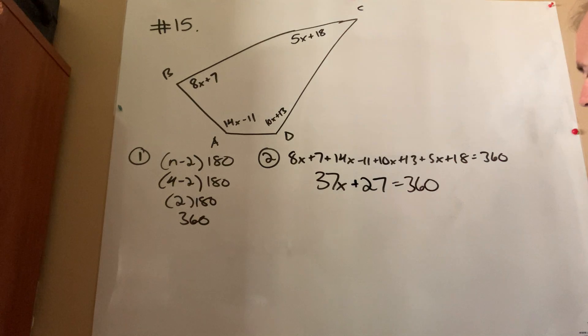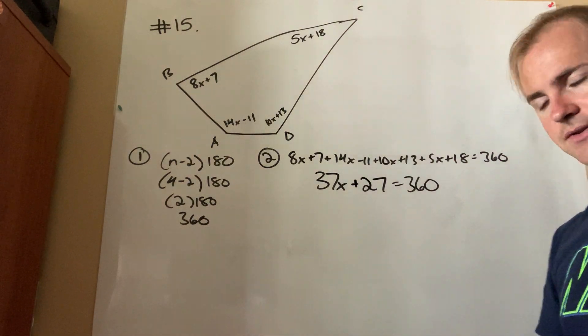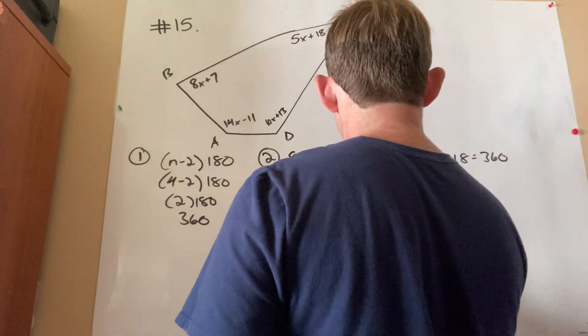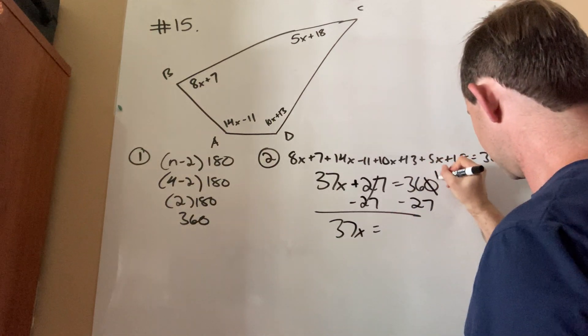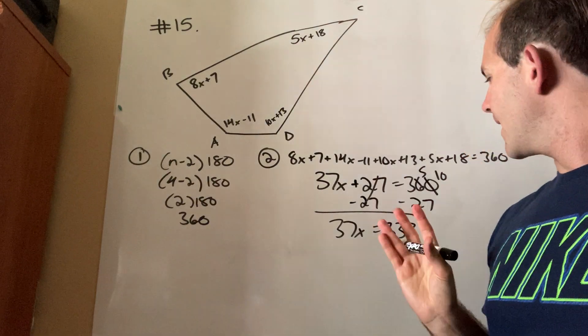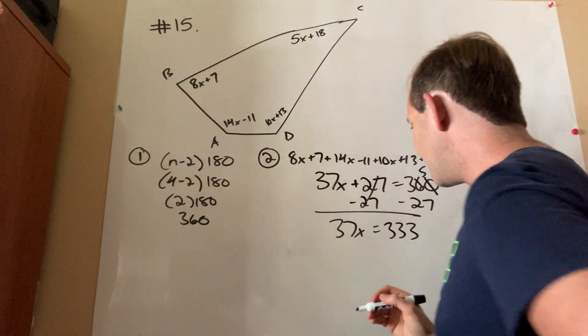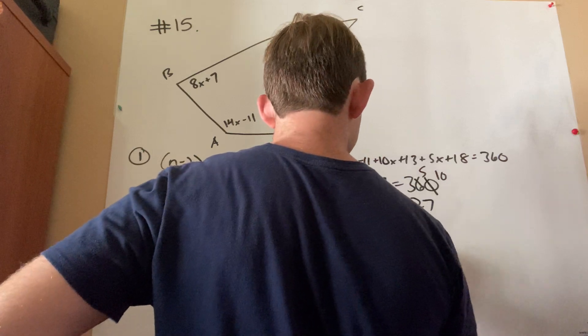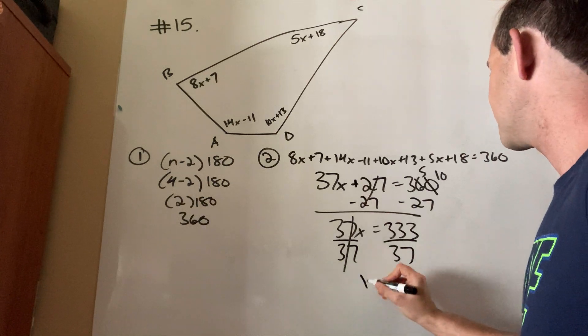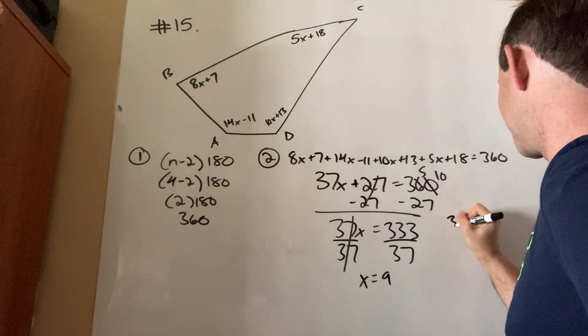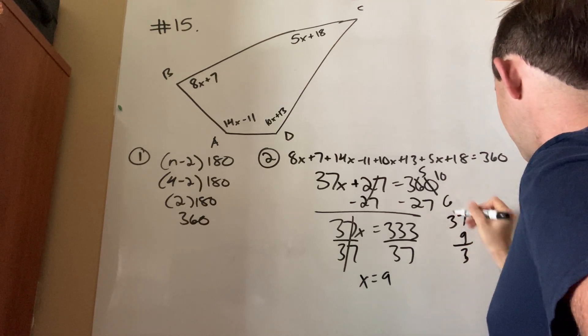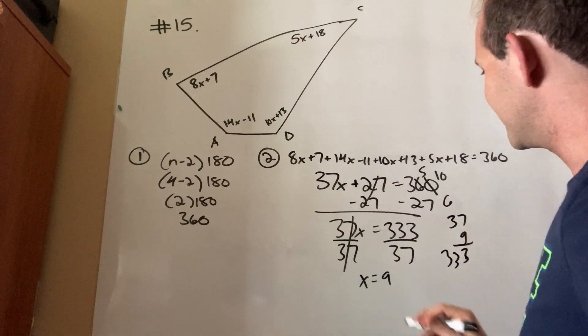All right. From here, guys, it's actually a relatively simple equation. Two steps. Let's subtract 27 from both sides. So, that gives me 37x equals, let's see, I've got to borrow here, 333. How do I get rid of a multiplied 37? I divide by 37 on both sides. And let's see here. I'm going to take a guess and say that x equals 9. Let's see if I'm right. 37 times 9. 7 times 9 is 63. 27. Yay! I'm right.